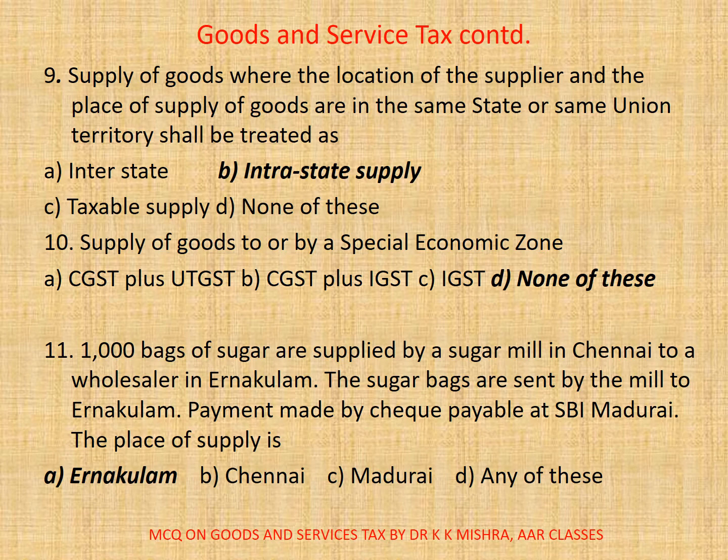Question 10: Supply of goods to or by a special economic zone — A. CGST plus UTGST, B. CGST plus IGST, C. IGST, D. none of these. Here correct option is D: none of these.